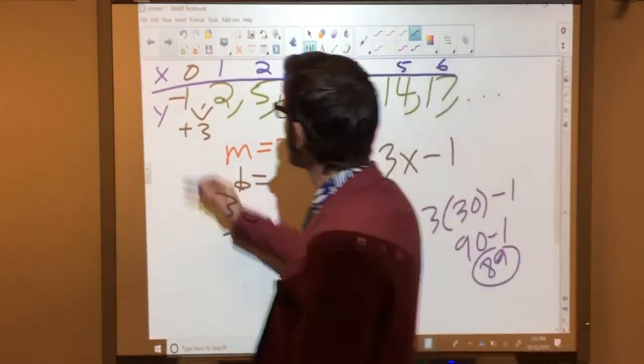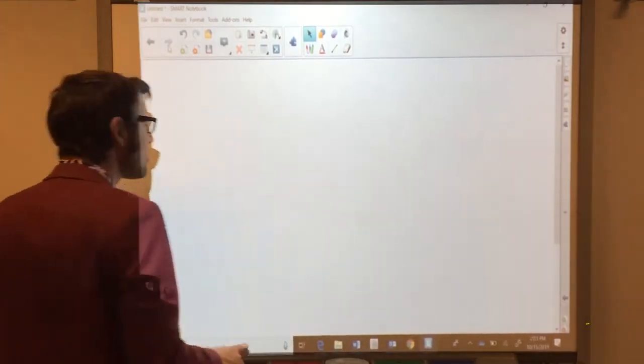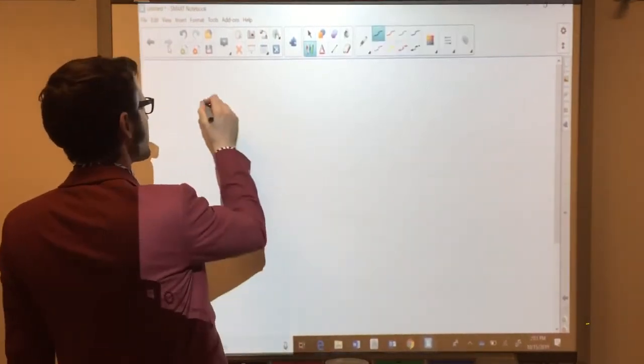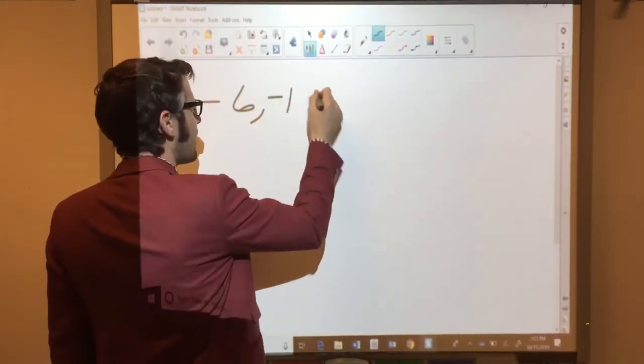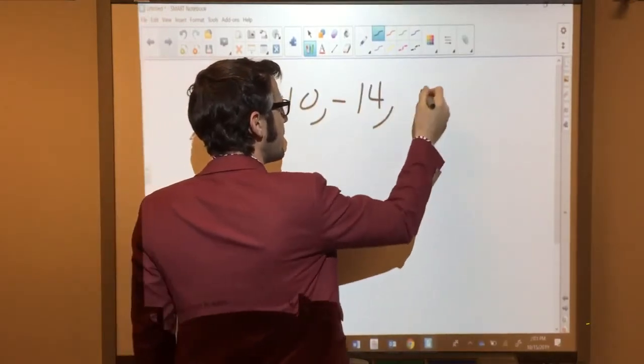One thing you want to watch out for is negative numbers. You do want to make sure that if you're looking at negative numbers like negative 6, negative 10, negative 14, negative 18, etc.